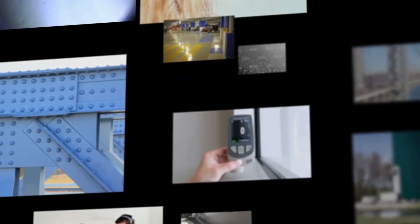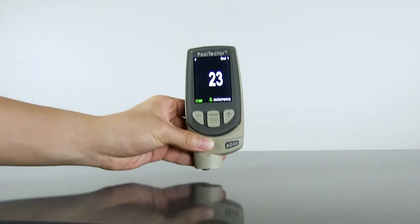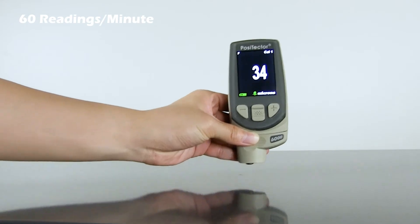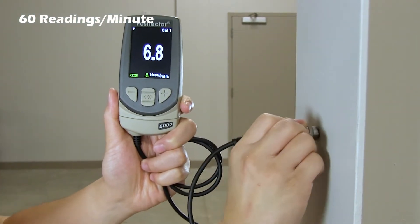As always, the Positector 6000 is the simple, durable, and accurate tool for the job. Positector 6000 probes now take over 60 readings per minute, achieving increased measuring speed without compromising quality, accuracy, or performance.